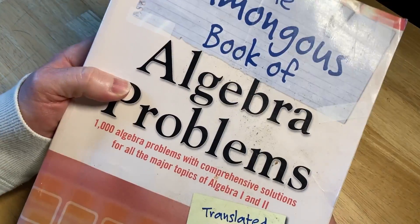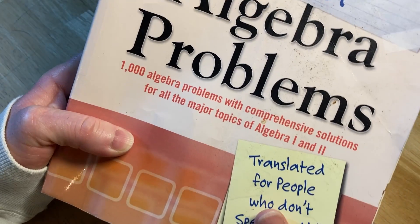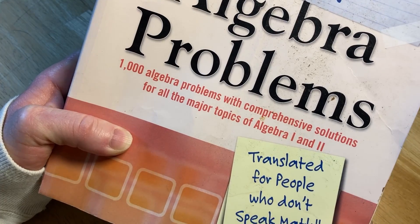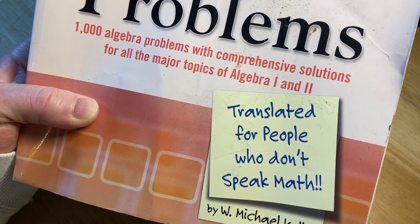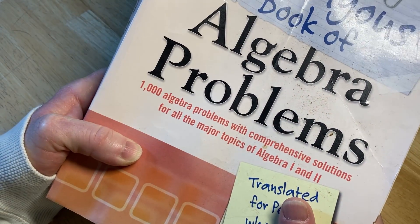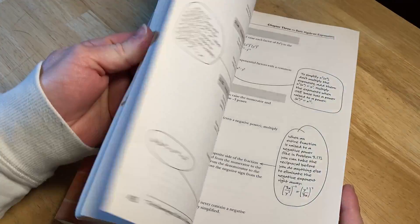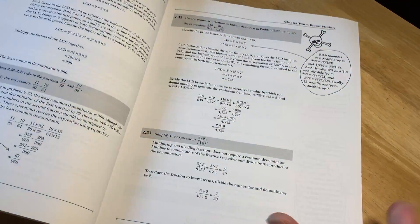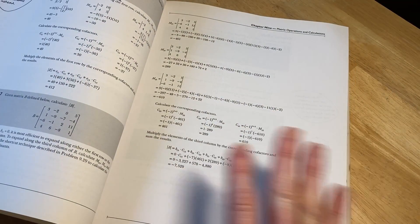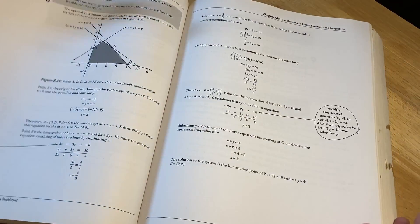It's called The Humongous Book of Algebra Problems: 1,000 algebra problems with comprehensive solutions for all the major topics of Algebra 1 and Algebra 2, translated for people who don't speak math. Algebra 1 and 2 are high school courses here in the United States. I've never taught high school, only colleges, but the mathematics is the same. This is basic algebra.